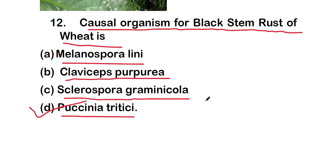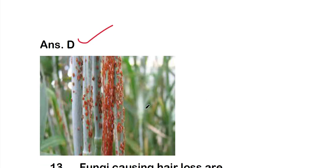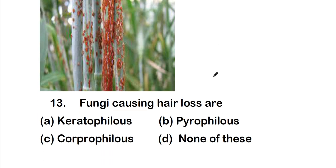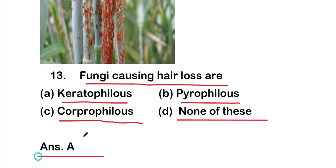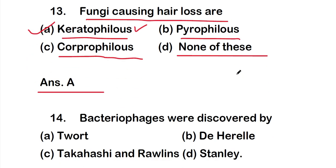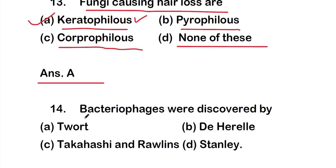Question 13: fungi causing hair loss are — option A: Keratophilic fungi, option B: Pyrophilic, option C: Cryophilic, or option D: none of these. The right answer is option A, keratophilic. Fungi causing hair loss are keratophilic fungi.